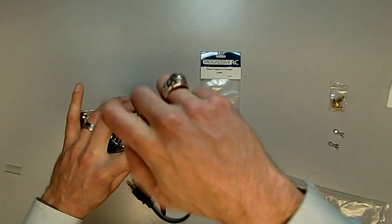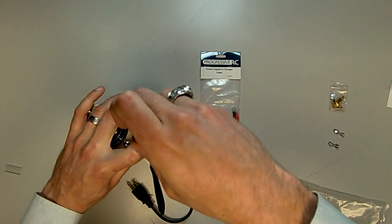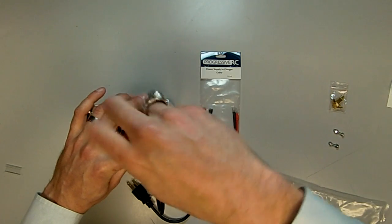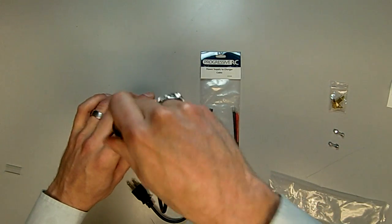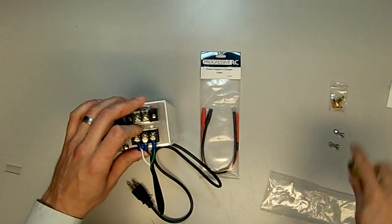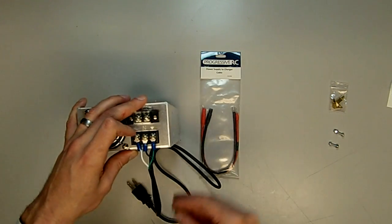Simply tighten these back down and you've made your AC input connections. Once that's done you can reinstall the plastic protective cover there.